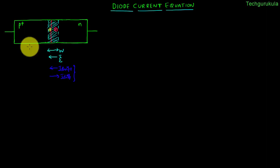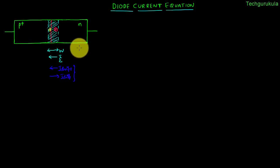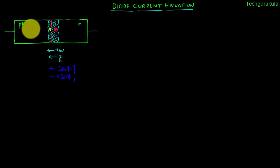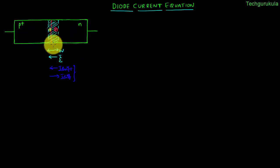As a result you wouldn't see a net current flowing through the p-n junction as we didn't apply any potential difference. We assumed p-side doping is higher than n-side, that's why the depletion width on p-side is smaller compared to the depletion width on n-side.